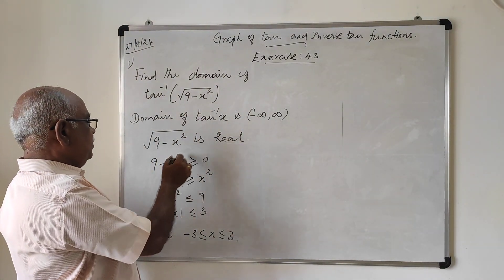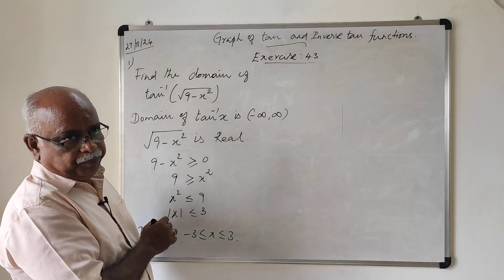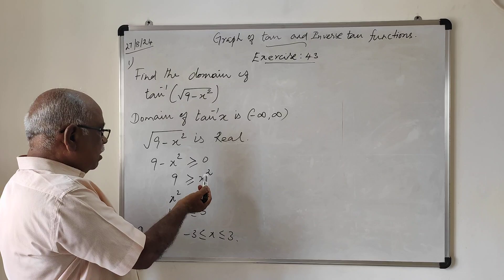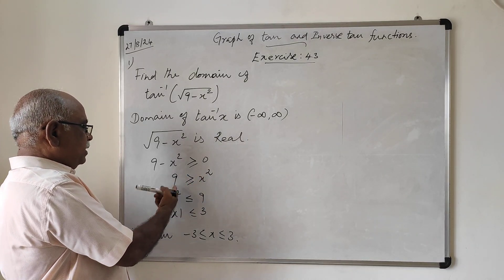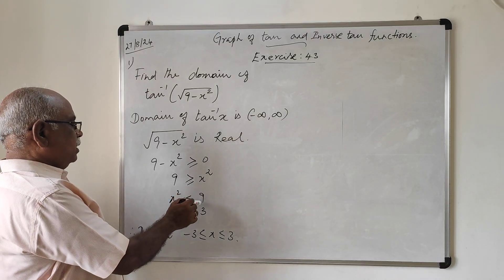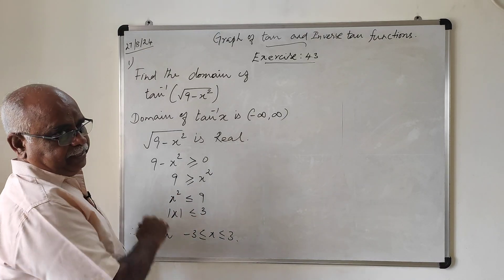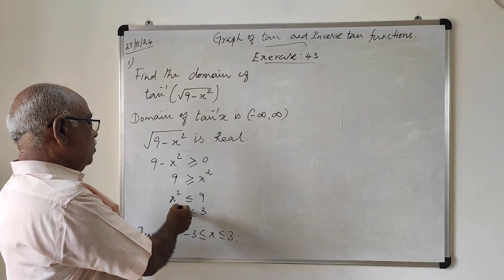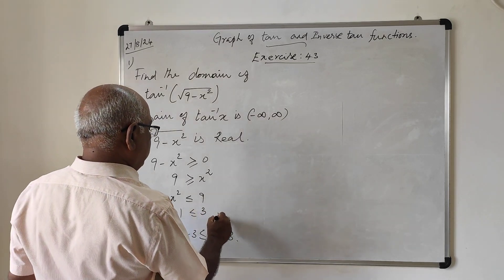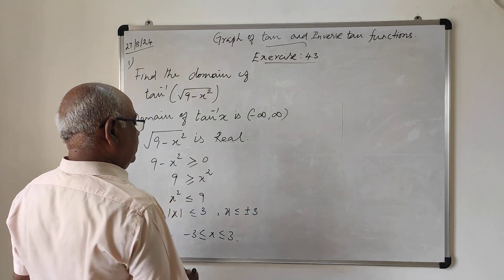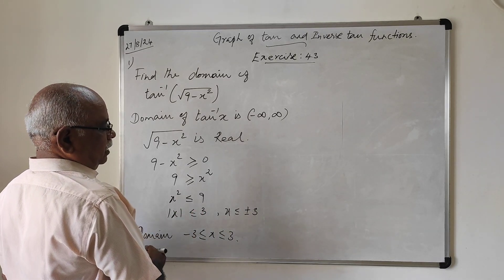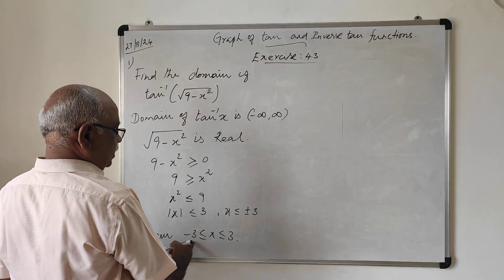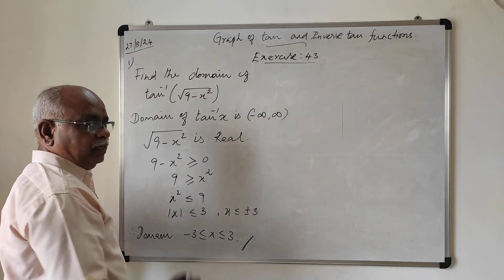Therefore, √(9 - x²) must be real, which means 9 - x² ≥ 0. This gives us x² ≤ 9, which means |x| ≤ 3, that is x lies between -3 and +3. So the domain of this function is [-3, +3].